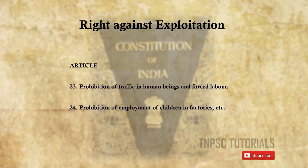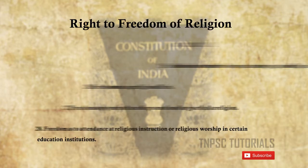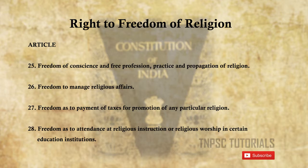Right Against Exploitation covers Articles 23 and 24. Article 23 deals with prohibition of traffic in human beings and forced labour. Article 24 deals with prohibition of employment of children in factories.